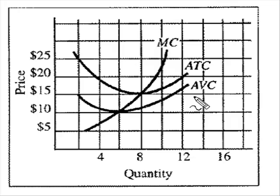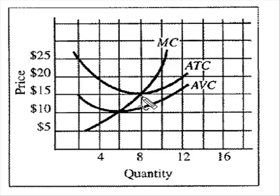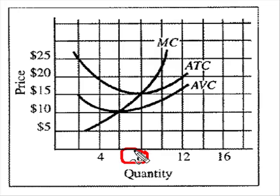First, which output would minimize the firm's average total cost of production? Well, you just look at the ATC, keep coming down until you bottom out. There we are, we've bottomed out on the ATC, and of course, this is the output level that would minimize average total cost of production.